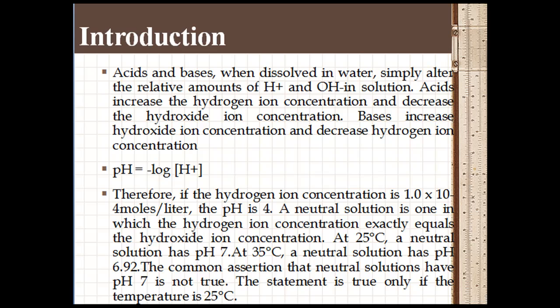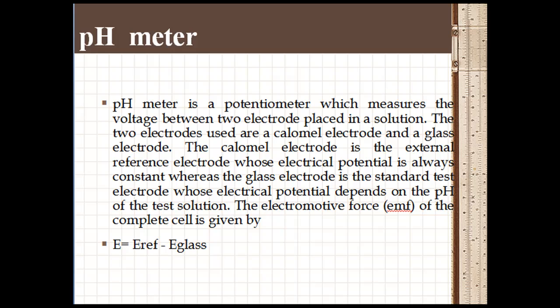The common assertion that neutral solutions have pH 7 is not true. The statement is true only if the temperature is 25 degrees Celsius. Now let's try to understand about the pH meter.